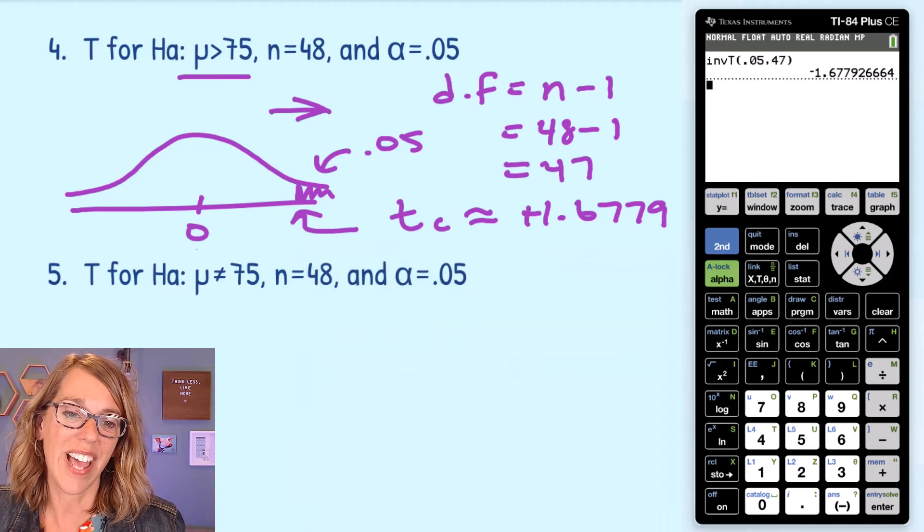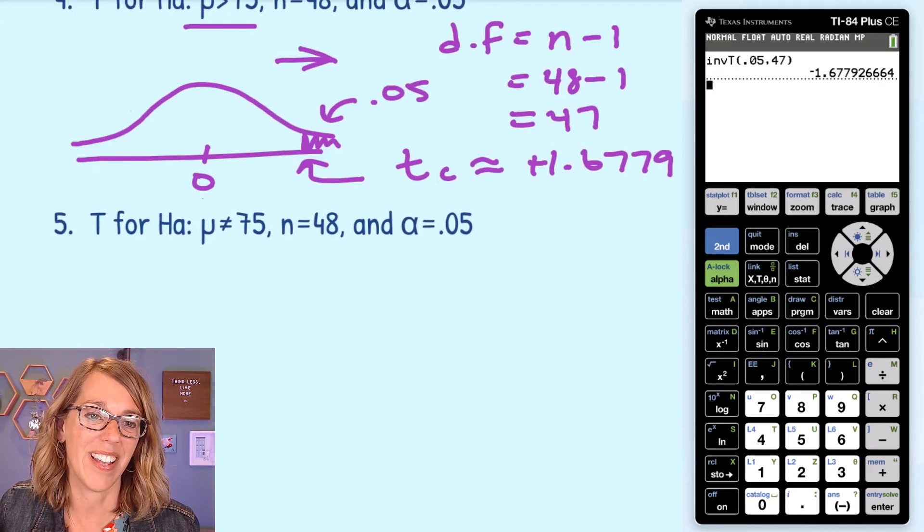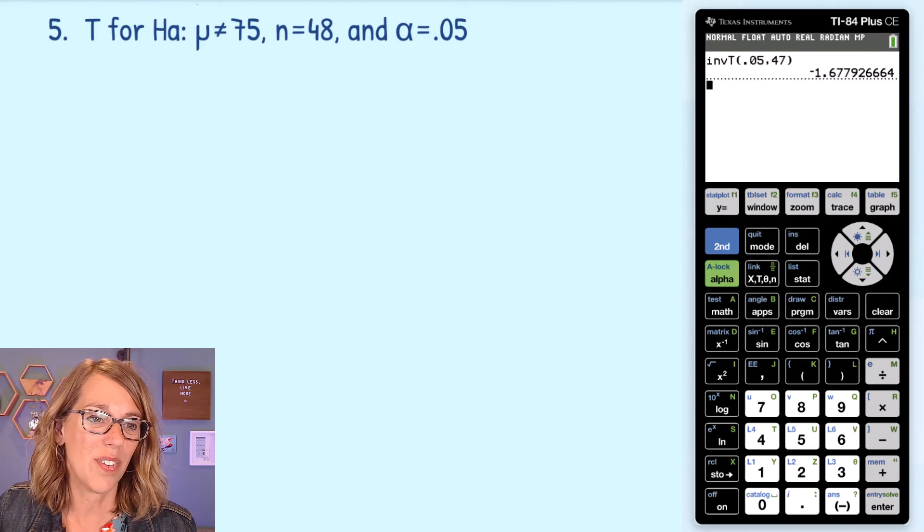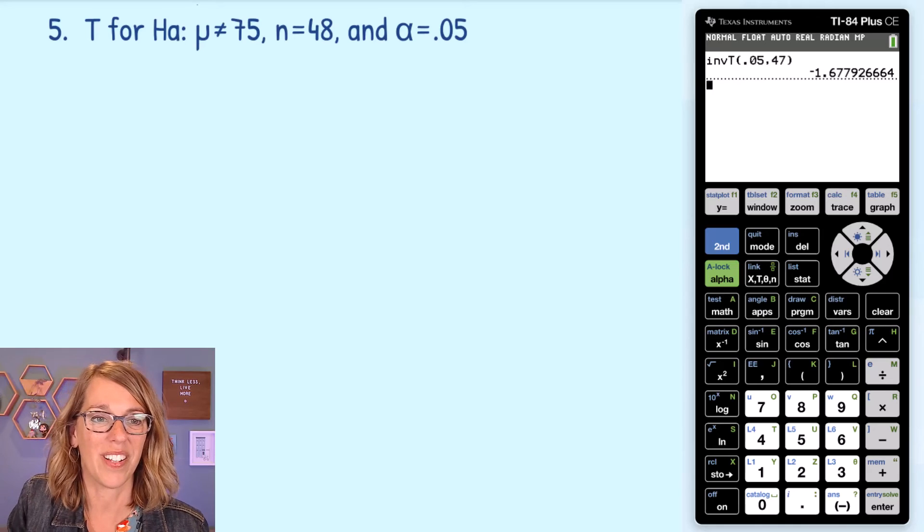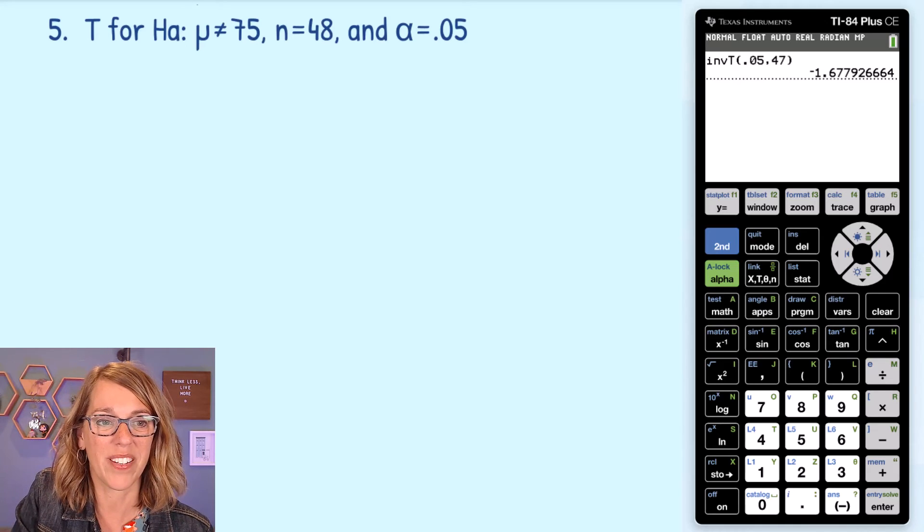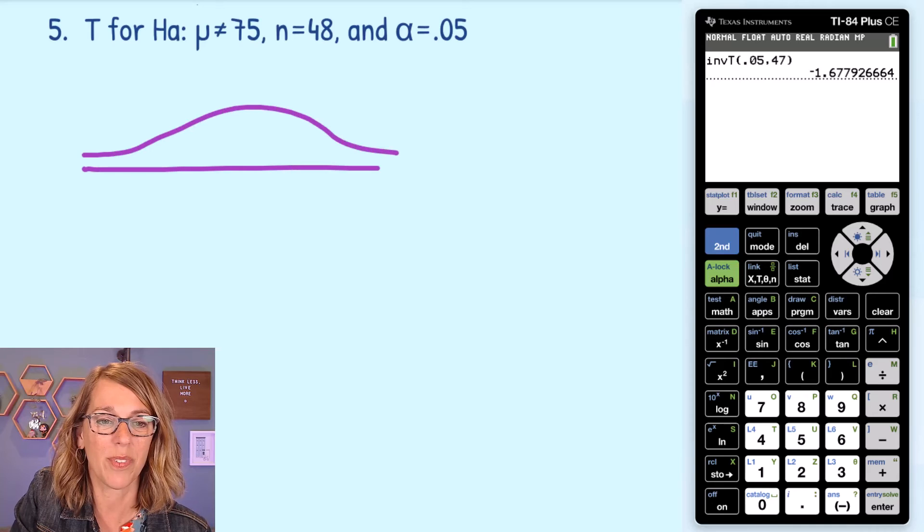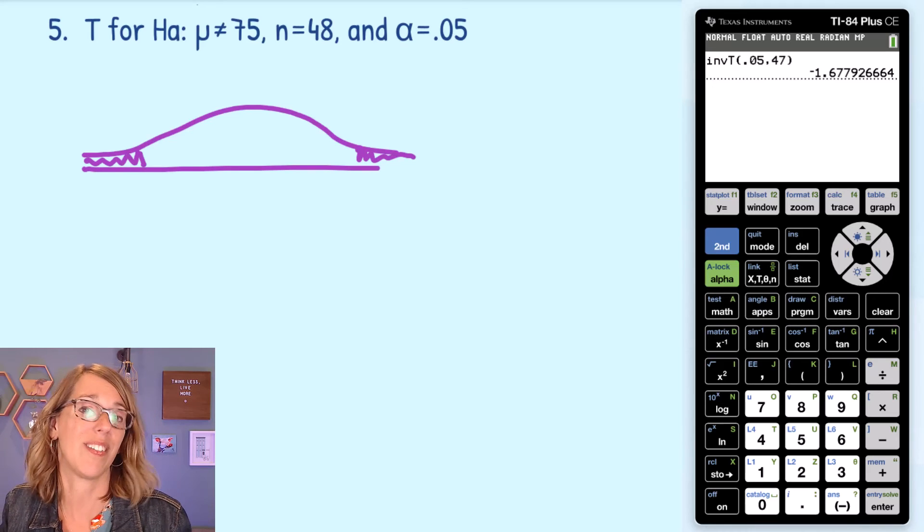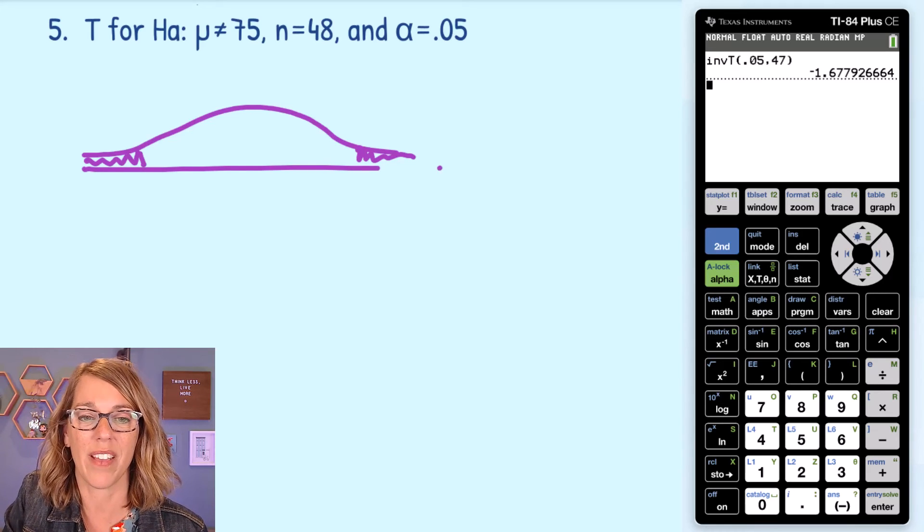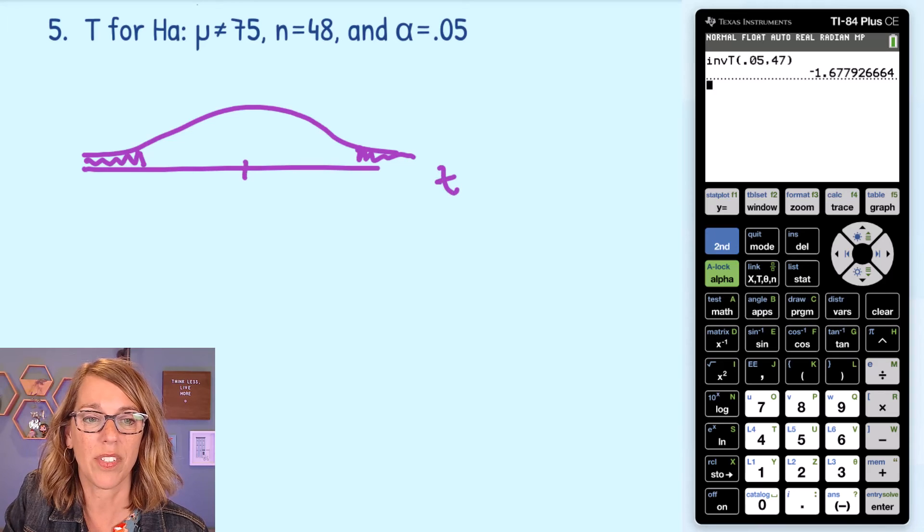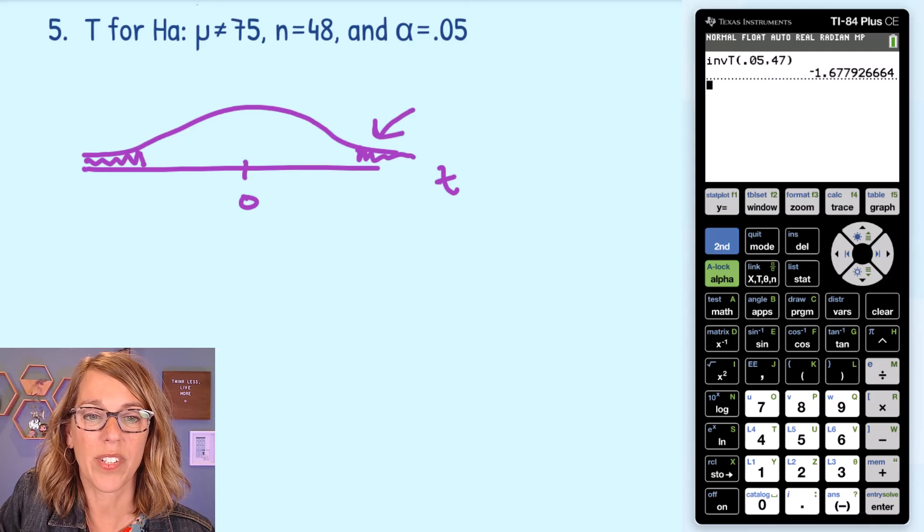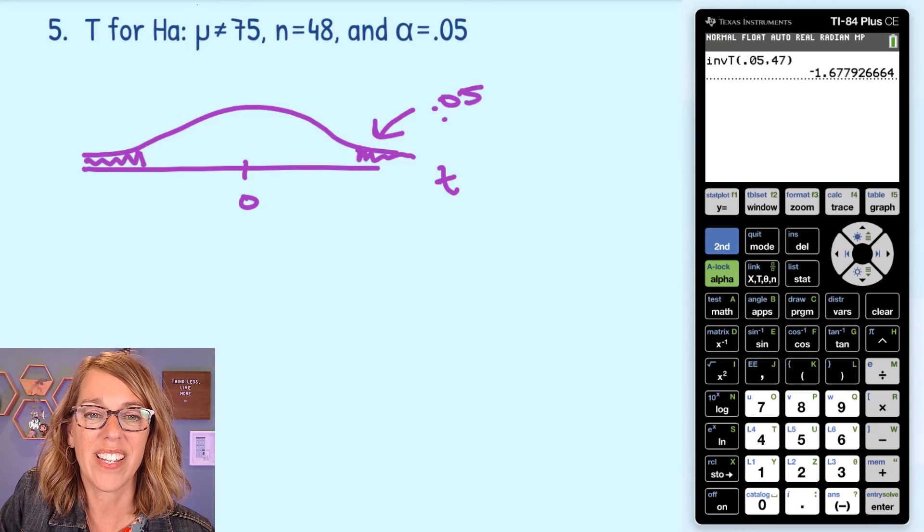One more for this last one. It's going to be a not equals. So in this last one, see if you can do it, and then go ahead and follow along with me. I've got a not equals, which means I've got a two-tail test. So I could be significant, either significantly less than 75 or significantly more than 75. We're going to look for those t values. So 0 lives right in the middle. But this time, that significance area of 0.05 is divided into two tails.